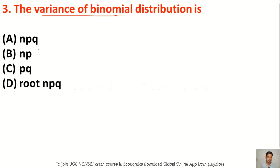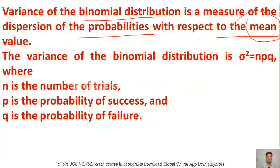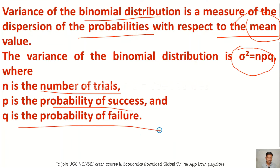Question 3: The variance of binomial distribution is — option A npq, option B np, option C pq, option D root npq. The variance of binomial distribution is equal to npq, so option A is correct. Variance of binomial distribution is a measure of the dispersion of the probabilities with respect to the mean value. Here N is the number of trials, P is the probability of success, and Q is the probability of failure.